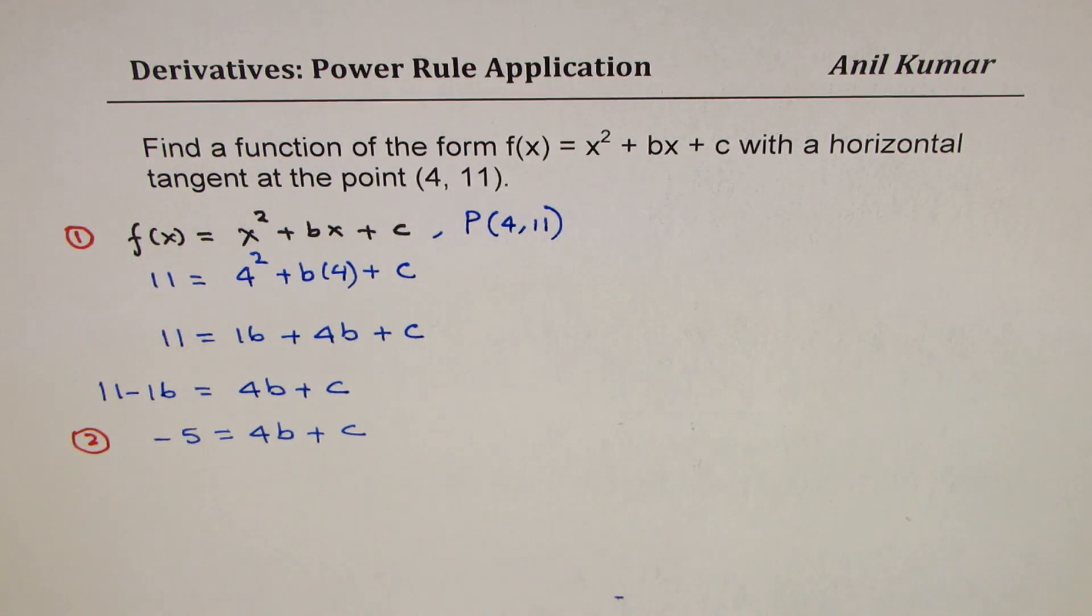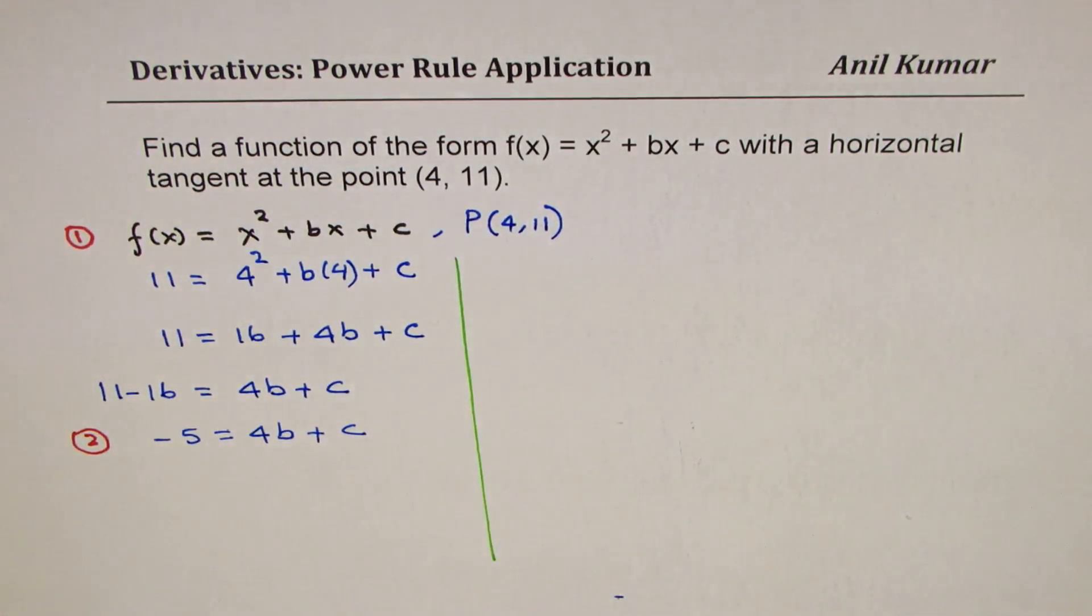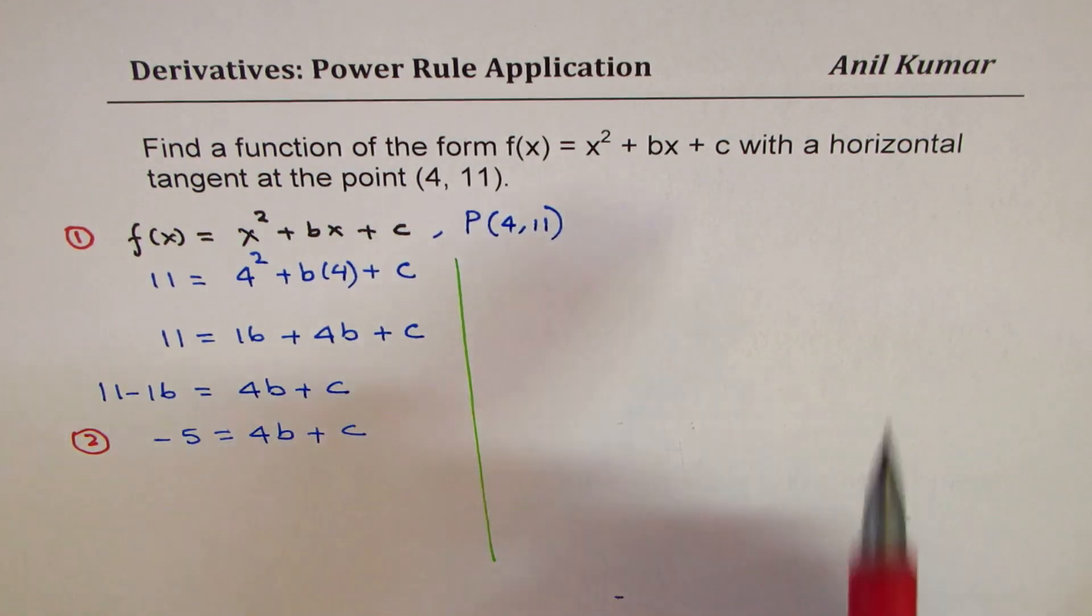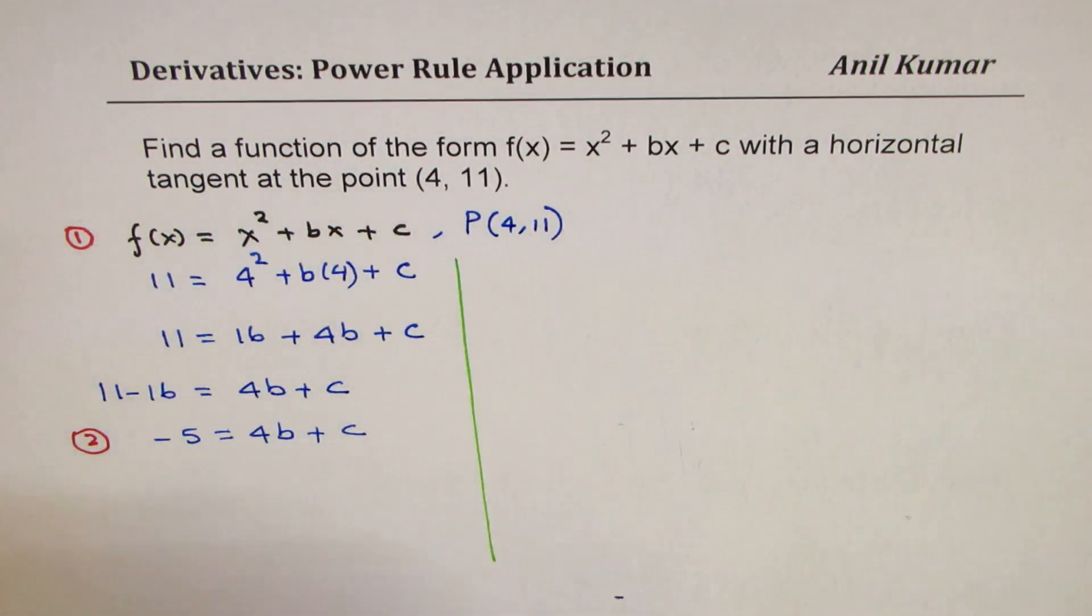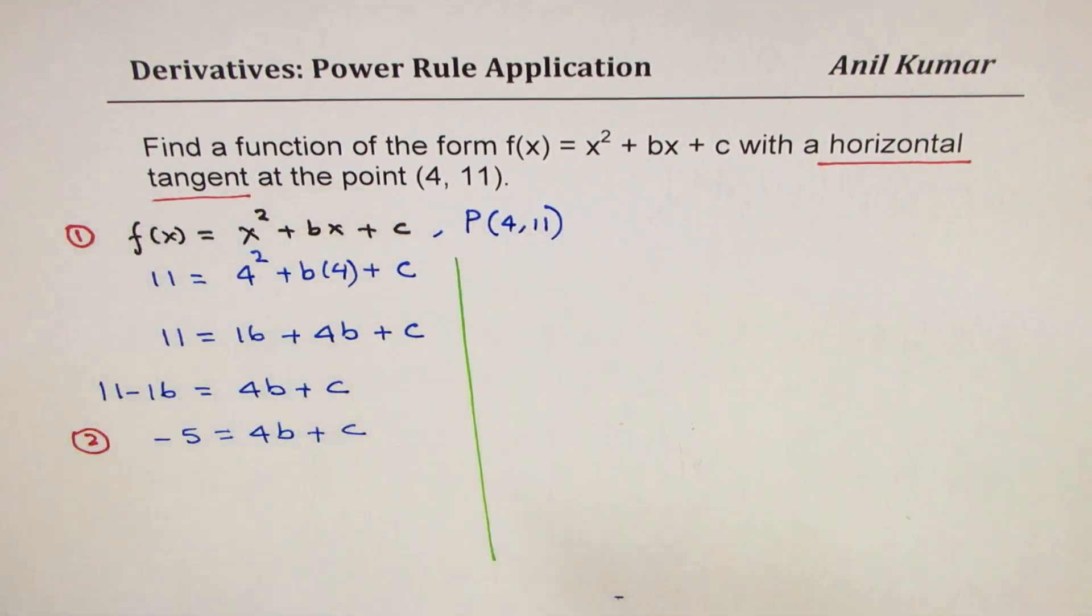Now we have to find both b and c. We have one equation. How do we get the second equation? To get the second equation, we will use the concept of horizontal tangent. So when I say horizontal tangent, it means what?